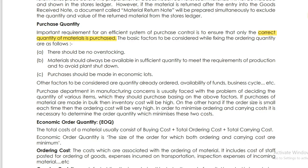First, there should be no overstocking. The materials should always be available in sufficient quantity to meet the requirements of production and to avoid plant shutdown. Materials should not be stored excessively. The third factor is that purchases should be made in economic lots, balancing cost for production.